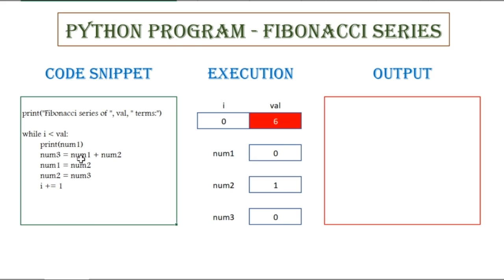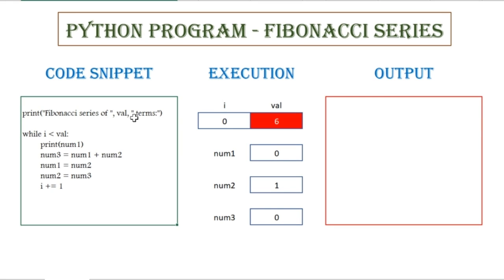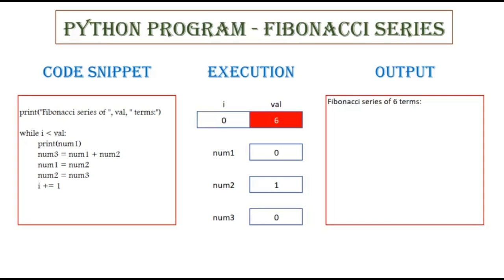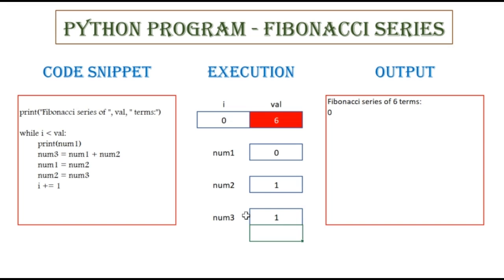This is the while block that is going to get executed. First, it is going to print 'Fibonacci series of 6 terms'. The while loop is going to check the condition: 0 less than 6 — yes, that is true. So first it will print the value of num1, which is 0. So 0 gets printed. Next, num3 equals num1 plus num2, so 0 plus 1 — it gets updated to 1. Num1 equals num2, and num2 is 1, so num1 also becomes 1. Num2 equals num3, the value of num3 is 1, so num2 also becomes 1. Then i gets incremented by 1, so i becomes 1.